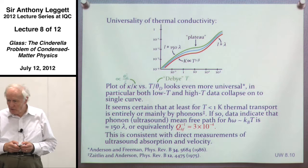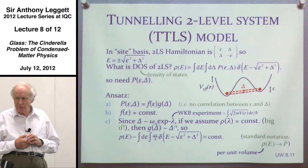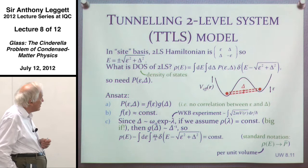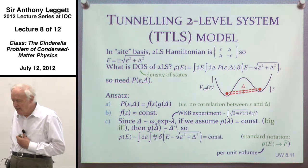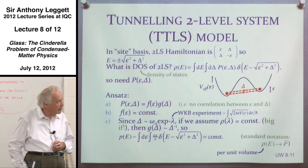So these data have been around essentially since 1970. Very soon thereafter, a couple of groups independently developed what is now known as the tunneling two-level system model — the TTLS model — of what was going on in glasses at low temperatures. This is now 40 years old, and it has become the established model in the field. I'm going to spend the next few slides reviewing the basics of that model.